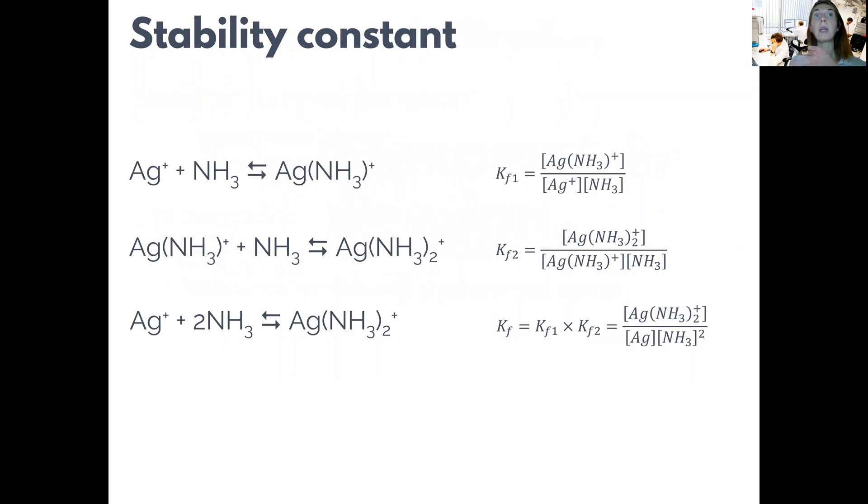This can make the formed complexes sometimes quite complicated. For example, silver cation forms complexes with ammonia, but it is a multi-stage process. First, one silver atom with one ammonia as ligand complex is formed.